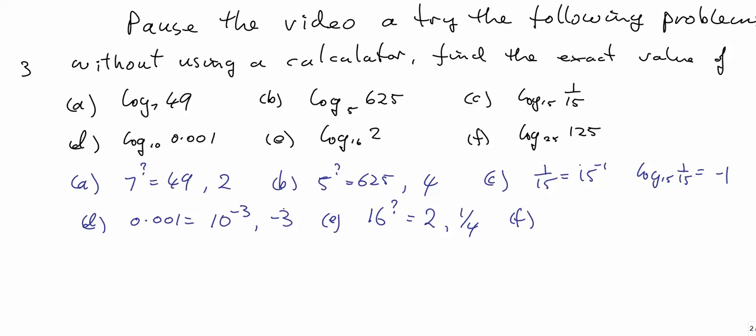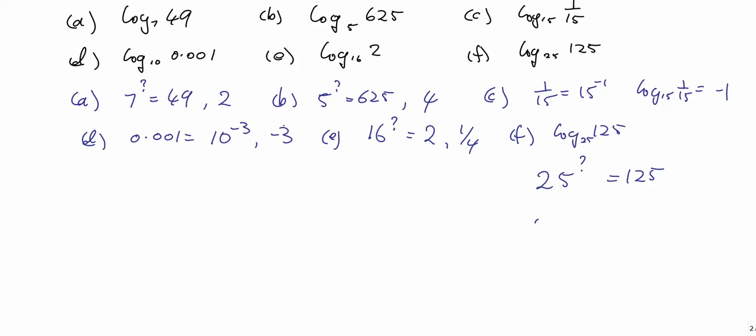Finally, the log of 125 to base 25. We need to find 25 to what power is 125. We take the square root of 25 to get 5 and then cube 5 to get 125. So 25 to the 3 over 2 is 125, and the log of 125 to base 25 is 3 over 2.